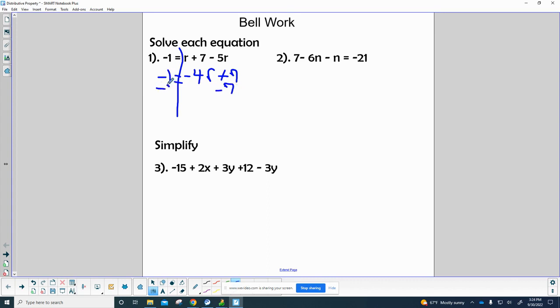We end up with negative 1 minus 7, which is negative 8, and all that is equal to negative 4r. Now let's divide both sides by negative 4. When we do that, negative 8 divided by negative 4 is positive 2. So in our first example, r equals positive 2.